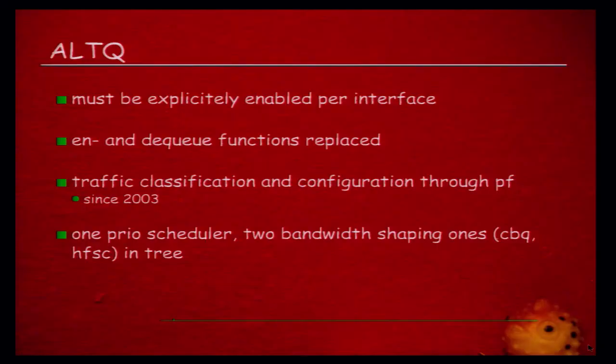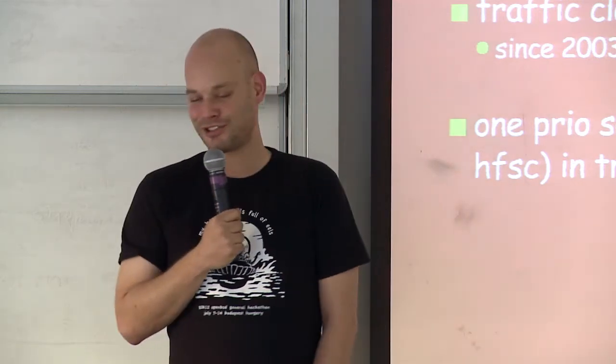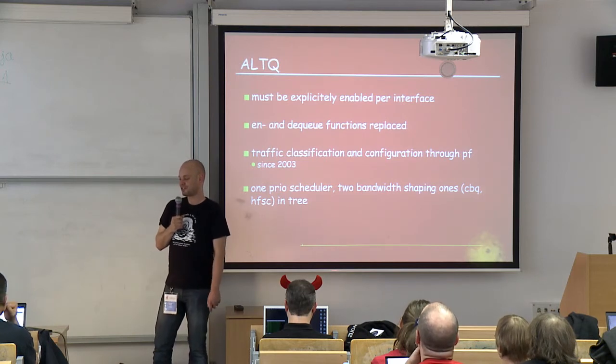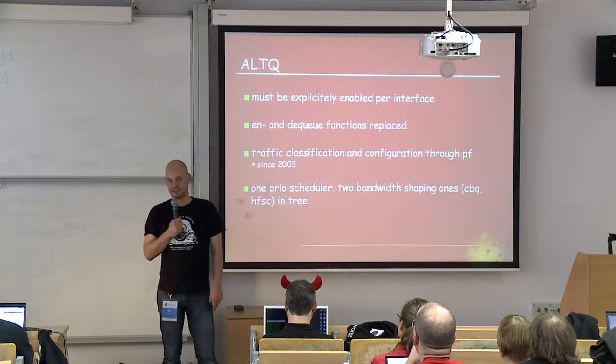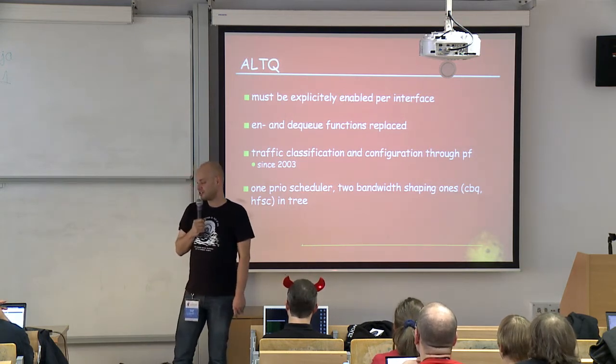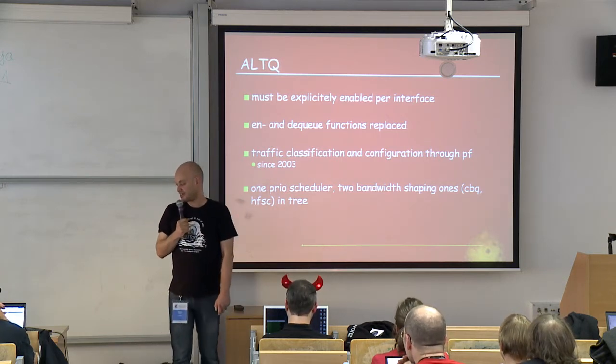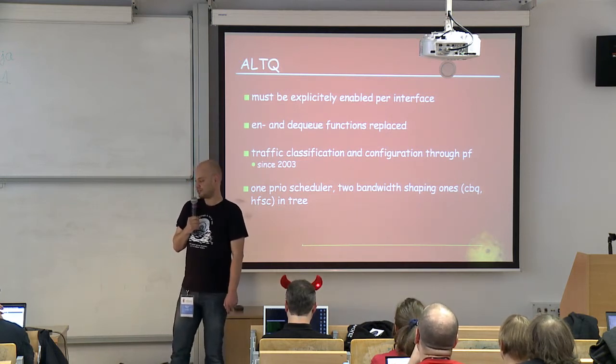ALTQ has to be enabled explicitly per interface, and the enqueue and dequeue functions are replaced. Traffic classification and configuration originally happened with ALTQ's own classifier and scheduler, which was barely usable — you could only really use it if you could read the documentation in Japanese. Kenjiro Cho and I merged ALTQ and PF to use PF as a classifier in 2003, which leads to the interesting situation that I'm replacing my own work. After the merge, the simplified ALTQ had one priority scheduler and two bandwidth shaping ones: CBQ (class-based queuing) and HFSC (hierarchical fair service curves).